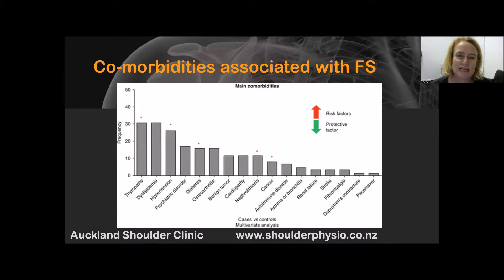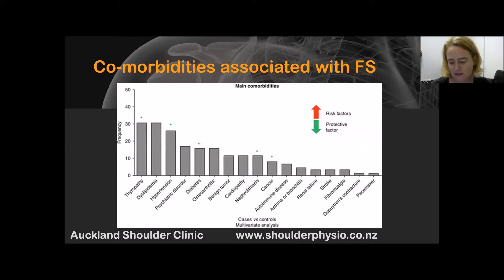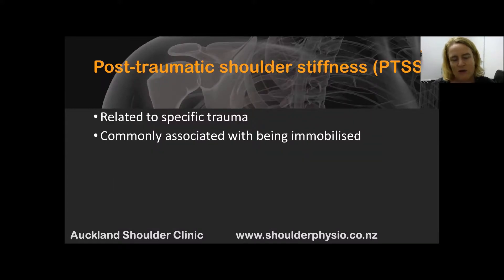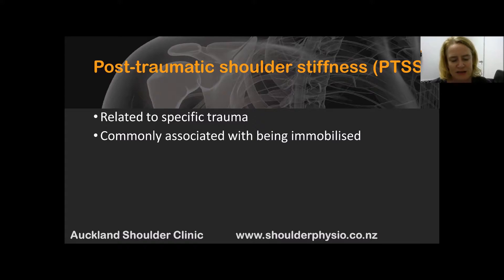In this picture we see the comorbidities associated with frozen shoulder — you are more likely to have a frozen shoulder if you have things like a thyroid condition or diabetes, among numerous other related conditions. We also talk about post-traumatic shoulder stiffness, which is stiffness related to a specific trauma. It's commonly associated with being immobilized after that trauma and fits into that earlier classification of secondary frozen shoulder or secondary shoulder stiffness.